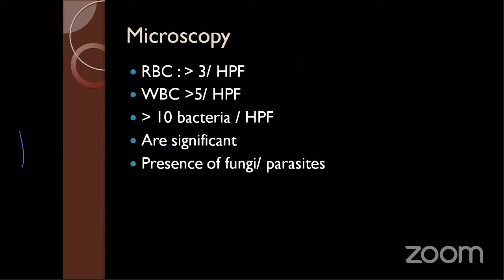If RBCs are abnormally present — more than 3 per high power field — or WBCs more than 5 per high power field, and bacteria more than 10, all these are significant values. Please try to remember them. You can sometimes also see fungi or parasites.